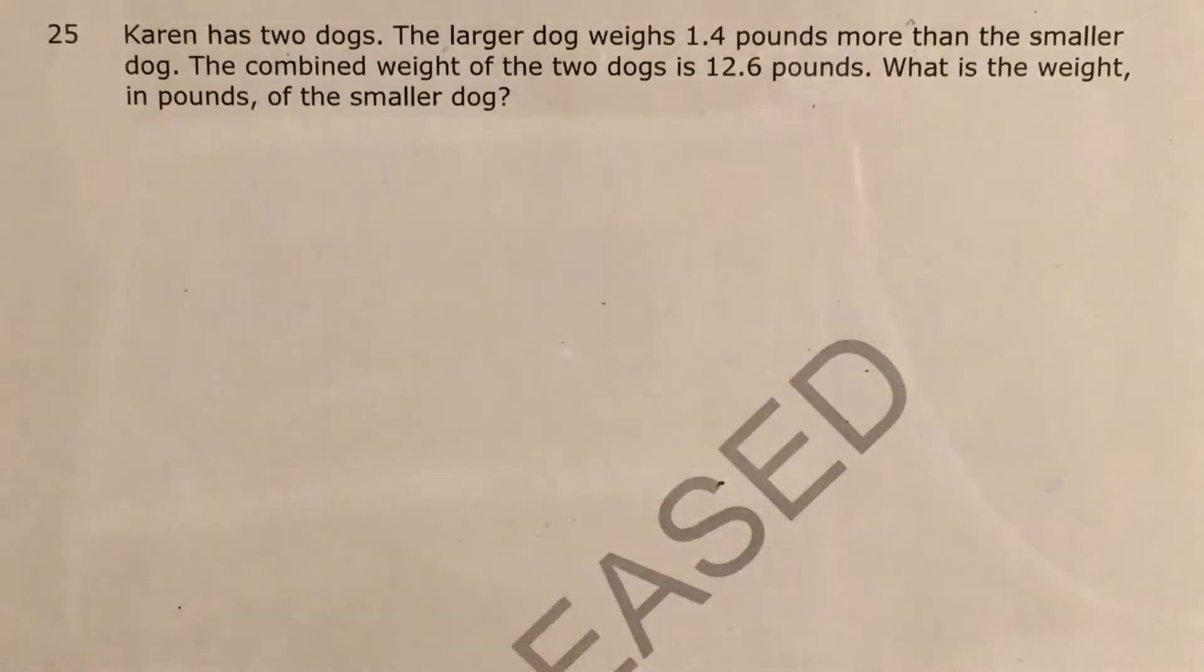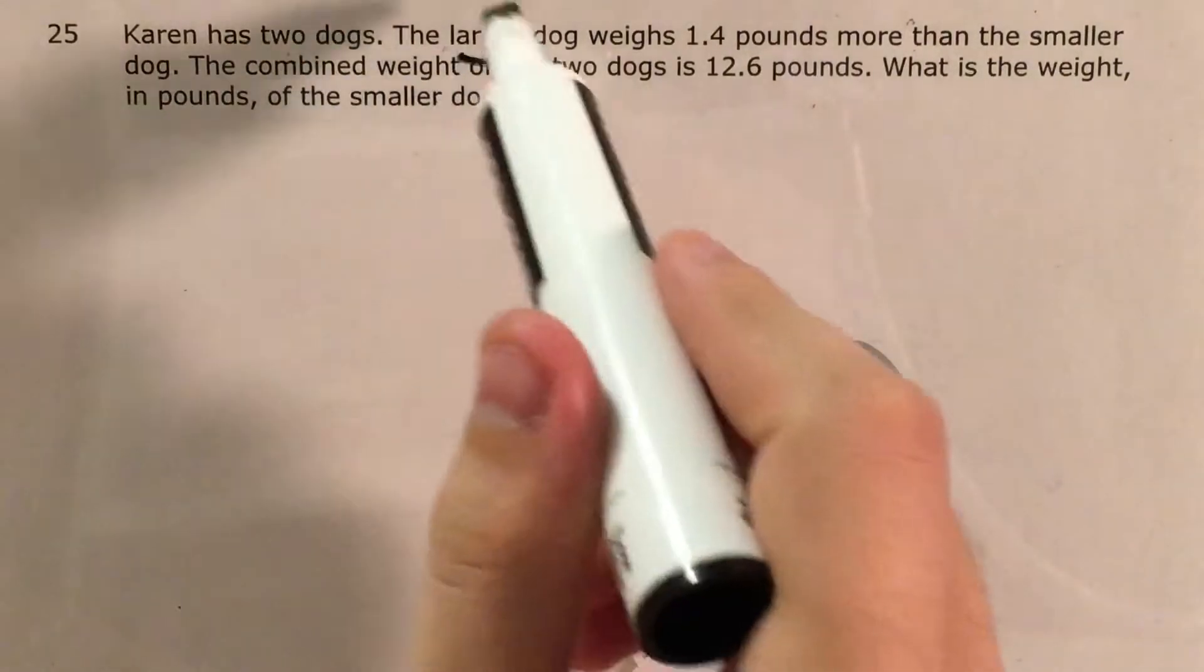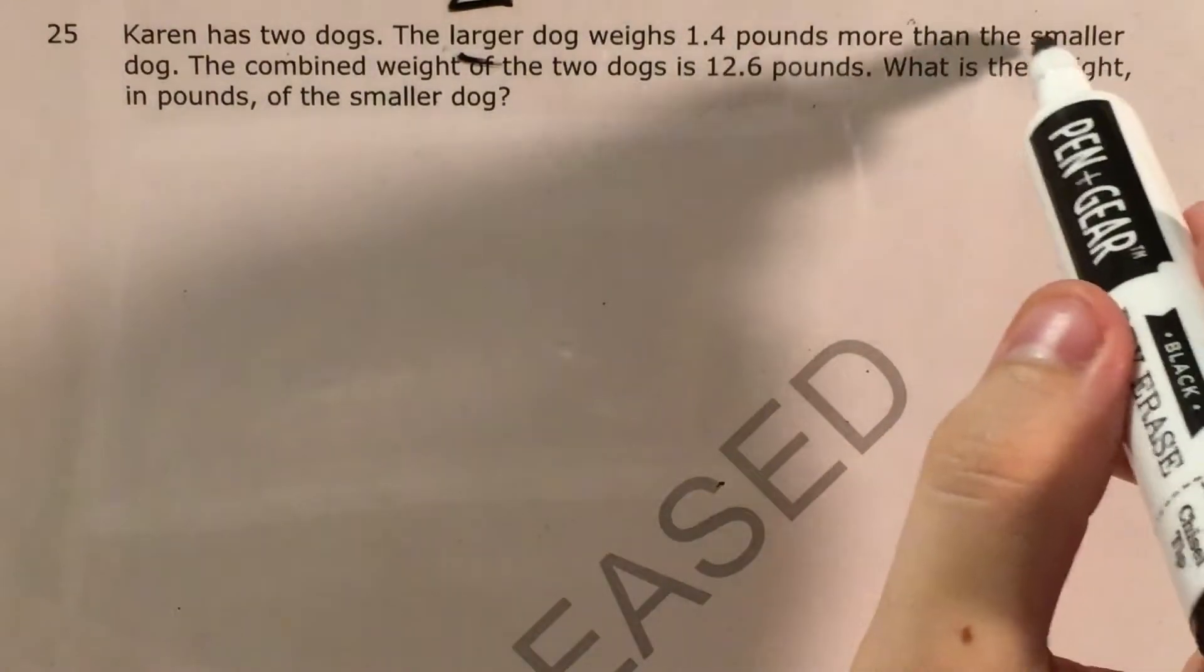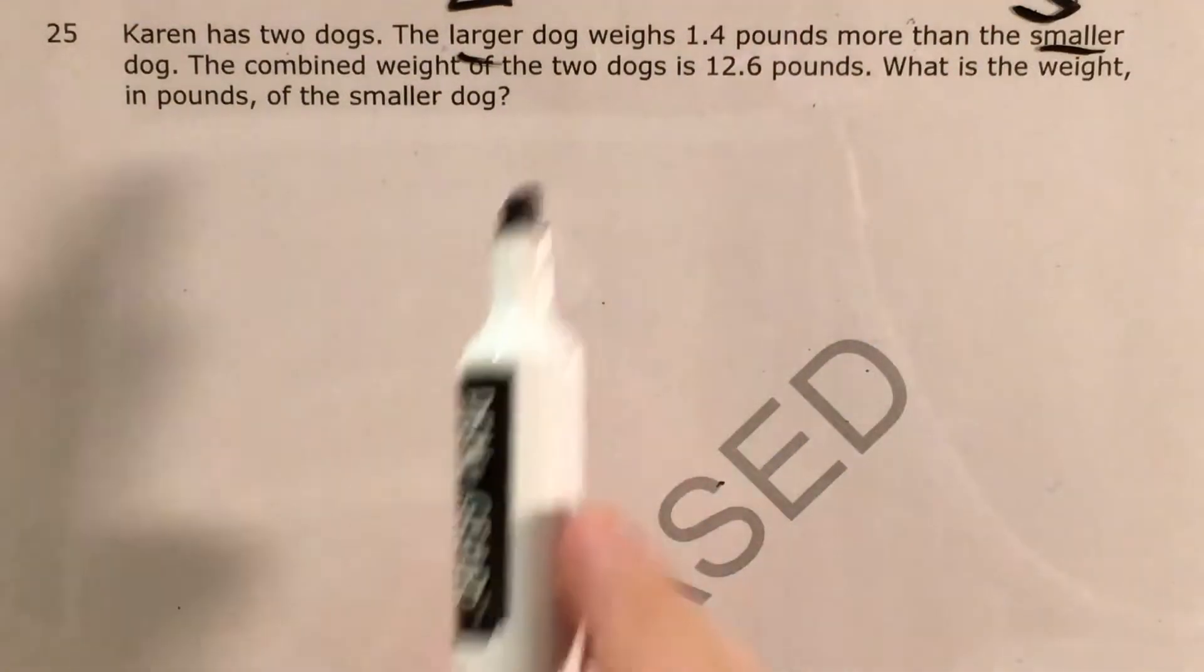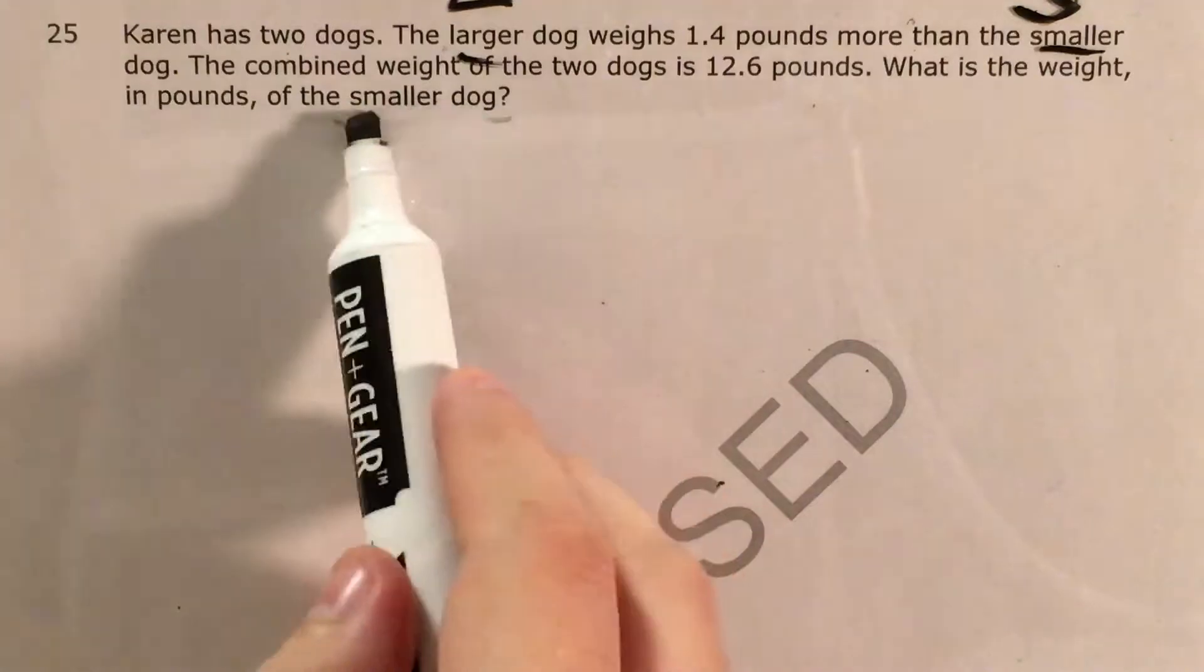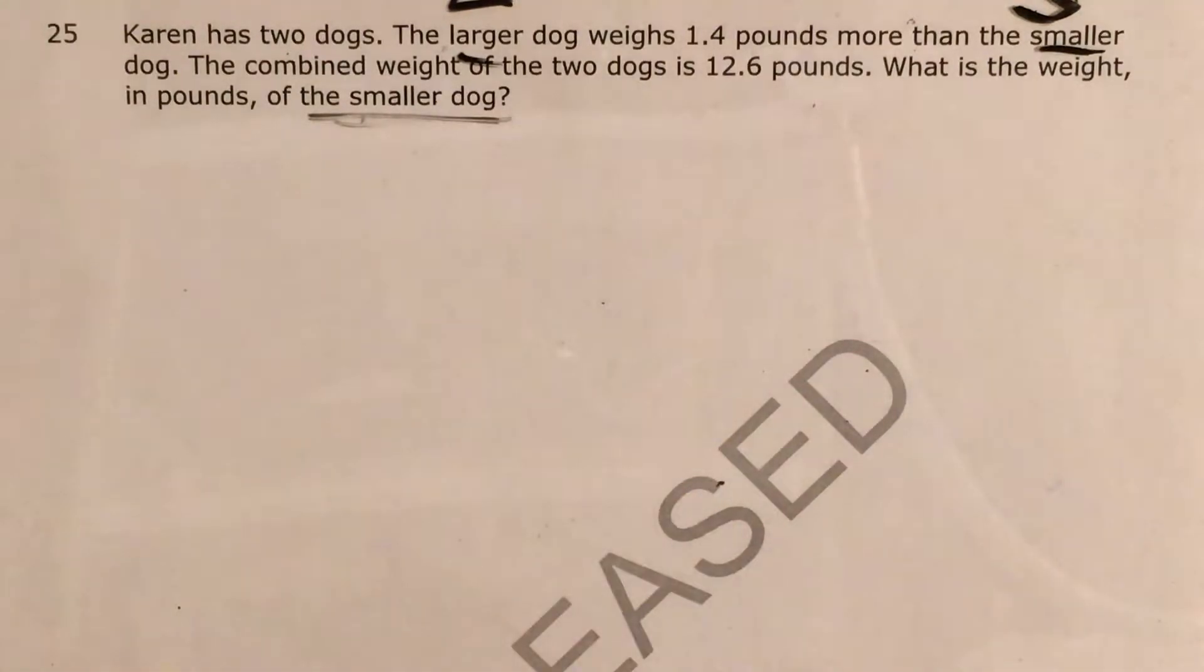I first want to point out that there's actually two things in this problem that we don't know: the larger dog, which I'll call L, and the smaller dog, which I will call S. We are trying to find the weight of the smaller dog, but we might have to end up finding the weight of the larger dog in the process.